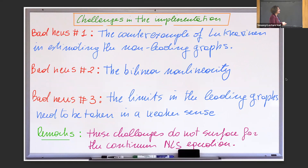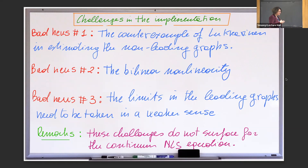What are the extra bad news? Let me just make a list first. The first bad news is that the counter-example of Lukkarinen is exactly for the type of omega that is singular in our case. What do I mean by counter-example? In their work, they have to estimate a bunch of integrals with omega, and they prove that those estimates cannot happen when omega is zero on a hyperplane. The second bad news is about the bilinear nonlinearity — you might think that having a bilinear nonlinearity is better than trilinear, but in fact that's not true in this case. And the third bad news is that when you take the limit on the leading graphs, there is an issue because of the singularity.